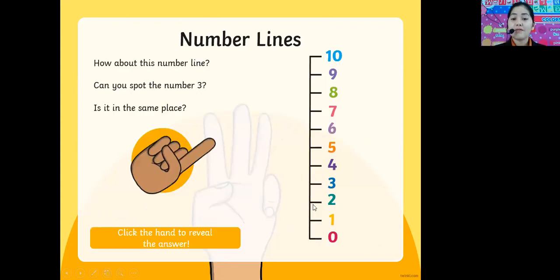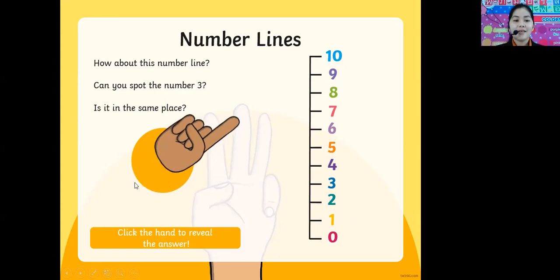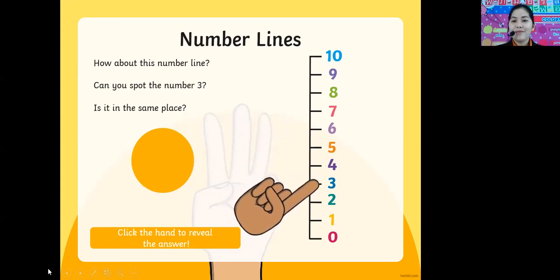We also have the vertical number line. Can you spot the number three? This is the number three here: zero, one, two, three, four, five, six, seven, eight, nine, ten. Can you click the hand to reveal the answer? That is number three.